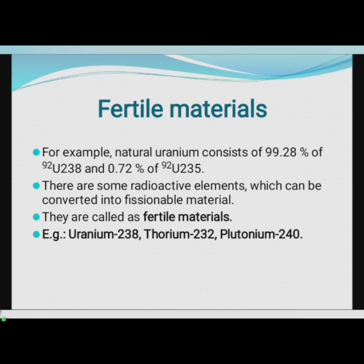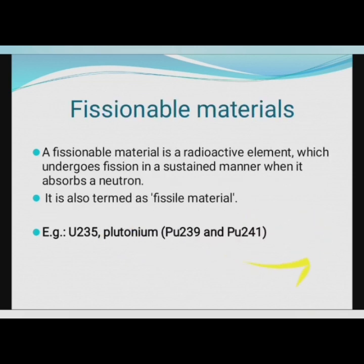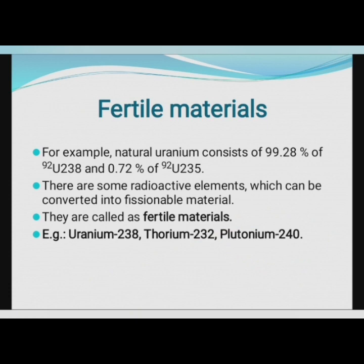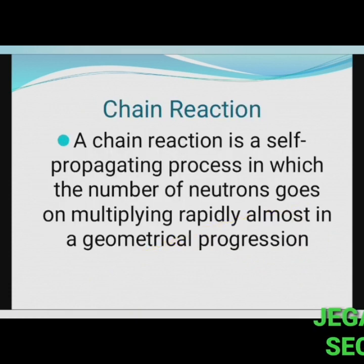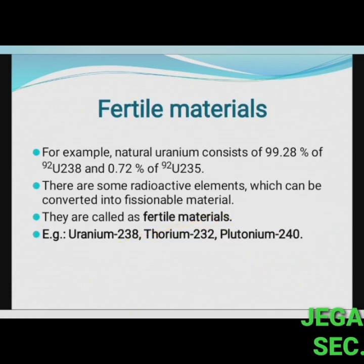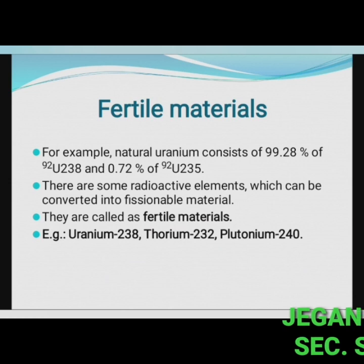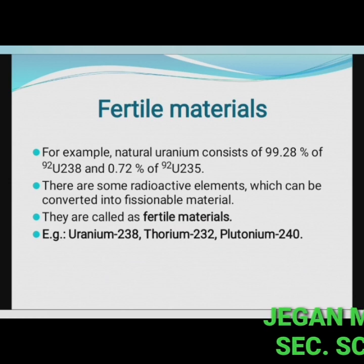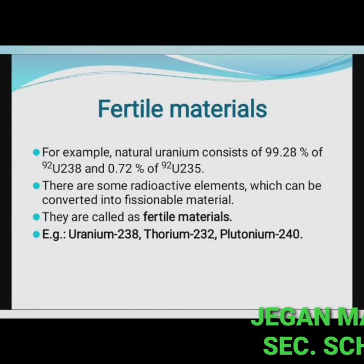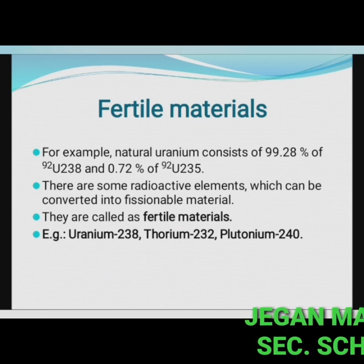Examples of fertile materials include uranium-238, thorium-232, and plutonium-240. These are radioactive elements that can be converted into fissionable material and are therefore called fertile materials.